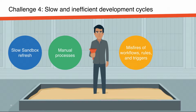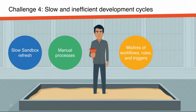And finally, if you have workflows, rules, or triggers, they could accidentally misfire. That could prevent your data from correctly loading into your sandbox environments, slowing you down and causing big problems. When your development cycles are bogged down by these slow and inefficient processes, release deadlines get missed, corners get cut, and it really slows down the overall dev cycle.